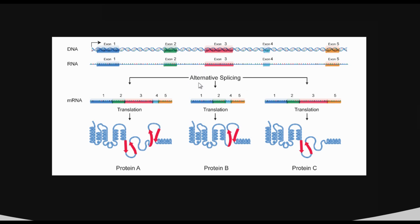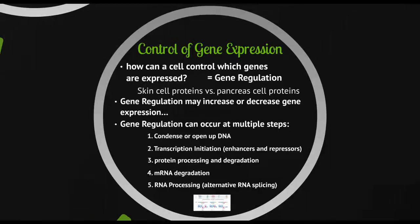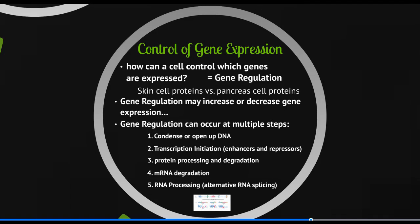The controls of alternative splicing — when we make one version versus another — is still a big area of active research. Hopefully you're impressed with the complexity of how cells work, and how they very carefully regulate at many different steps which genes are being expressed, how much protein is being made, and ensuring the right protein is made in the right cell.